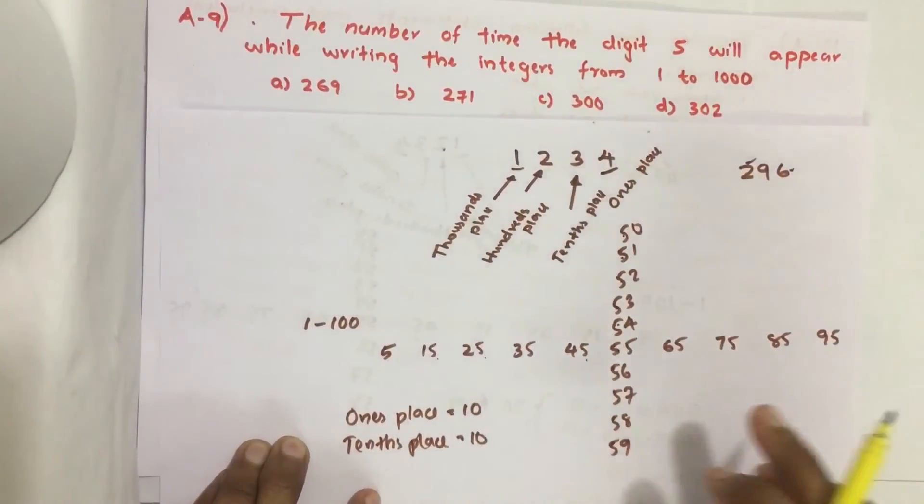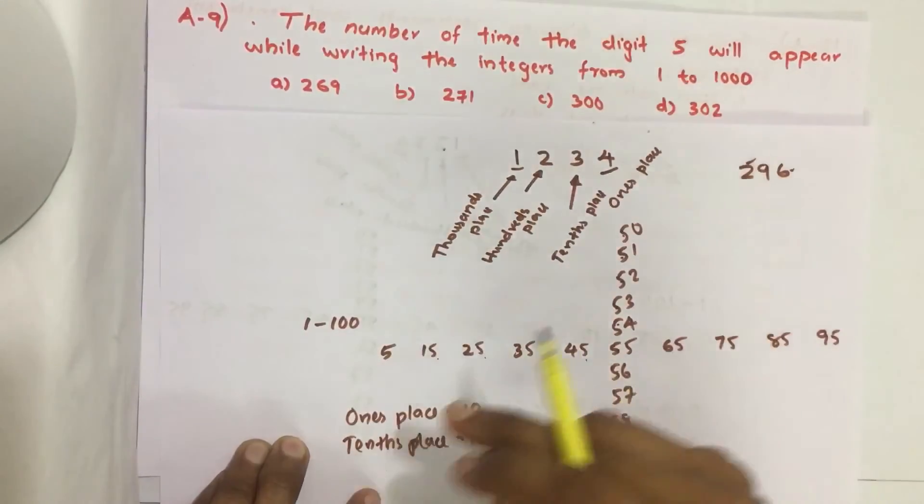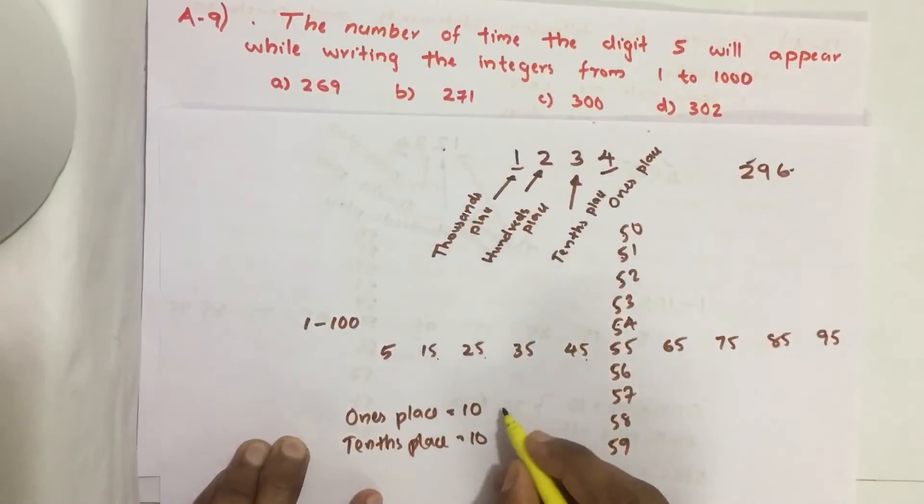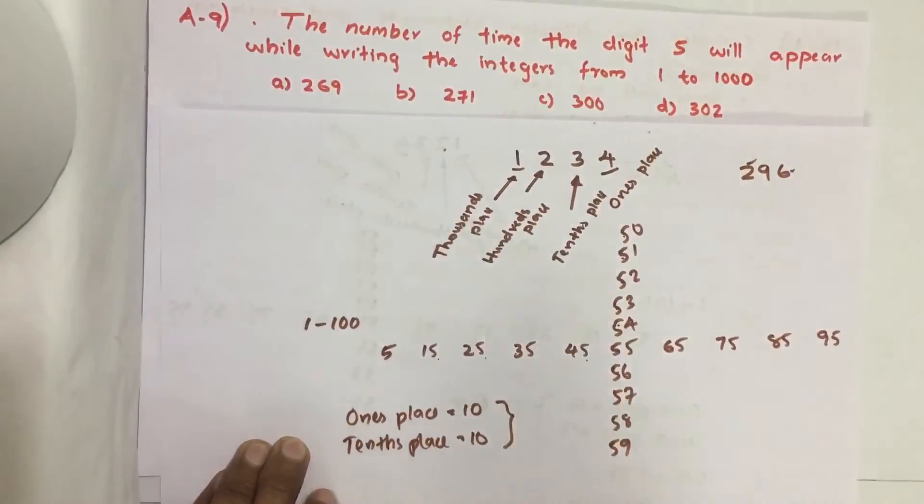What is the advantage of counting like this is there won't be any chance to repeat one number again. So how many 5's are there while counting 1 to 100? Total 20.